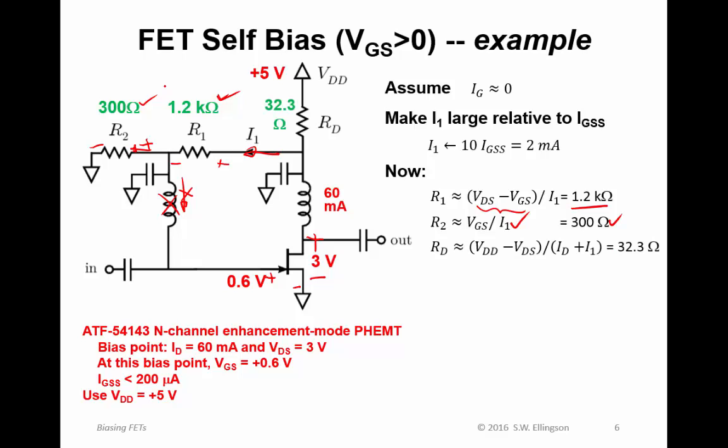Now we need the value for the drain resistor. The way to do that is simply circuit analysis. V_DD minus V_DS is the drop across that resistor. I_D plus I1 is the total current flowing through that resistor. And so we get R_D is 32.3 ohms. And that really completes the design of the bias circuit, at least the resistors.